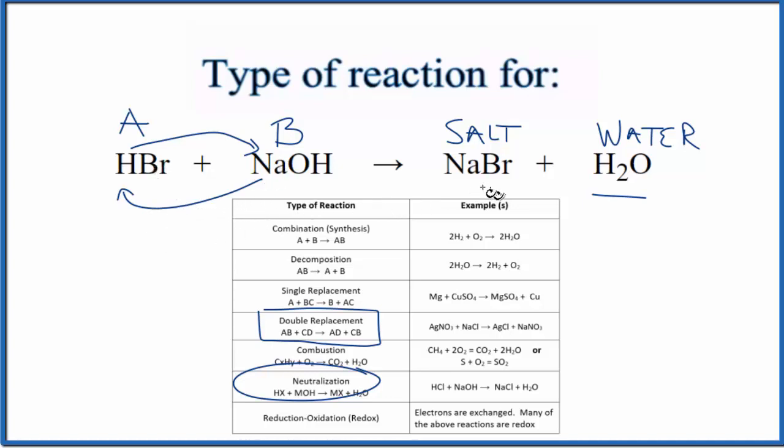So one reaction can be categorized as more than one thing, especially in the case when we have neutralization. That's the type of reaction for HBr plus NaOH, hydrobromic acid plus sodium hydroxide.